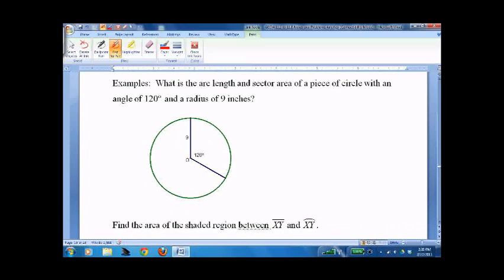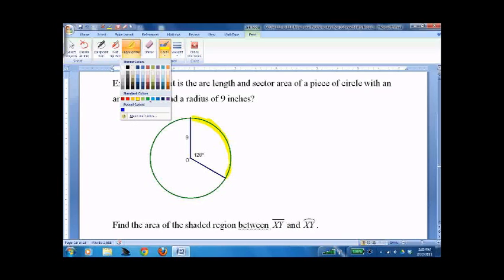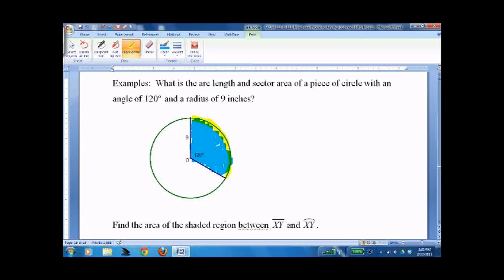So here's an example. What's the arc length and sector area of a piece of circle with an angle of 120? We want this piece for arc length and we want this piece for sector area.